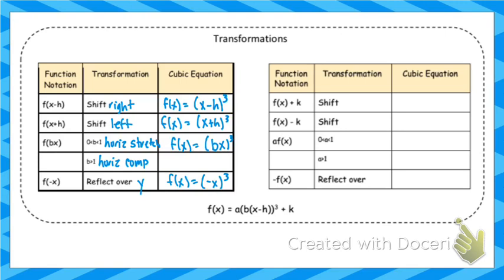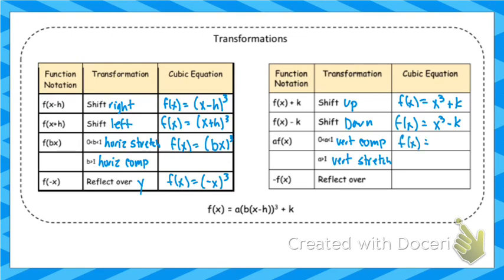For vertical transformations: plus k is a shift up, minus k is a shift down — both outside the parentheses. Between 0 and 1 is a vertical compression; greater than 1 is a vertical stretch, multiplied outside the parentheses. A negative outside reflects over the x-axis. When you combine all transformations, factor out the b value so it's just (x − h), which makes it easy to see your shifts and your point of inflection. The point of inflection is (h, k), just like the vertex for quadratics.